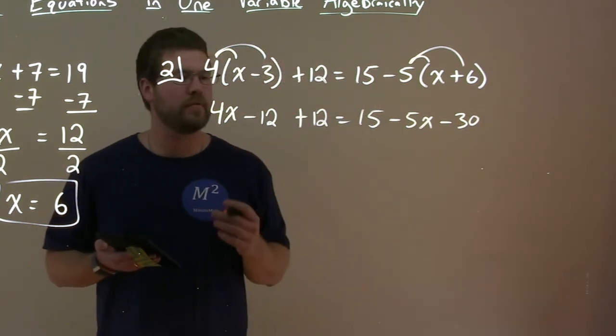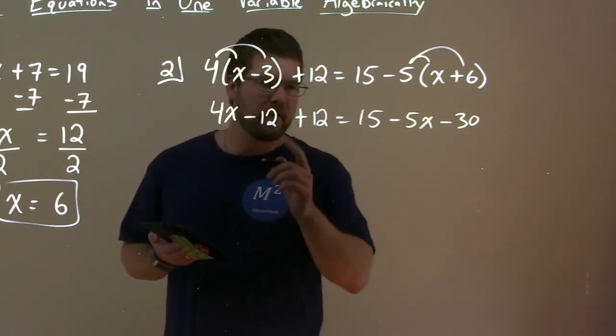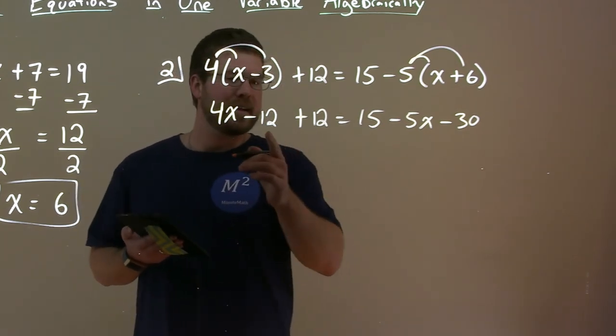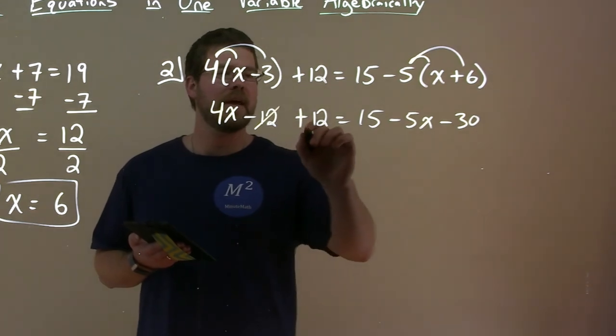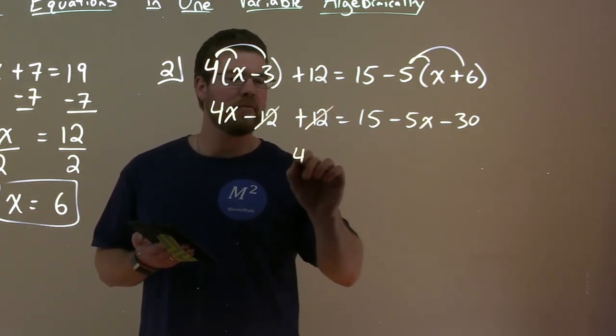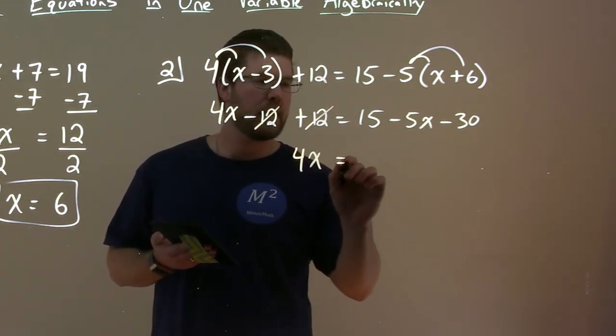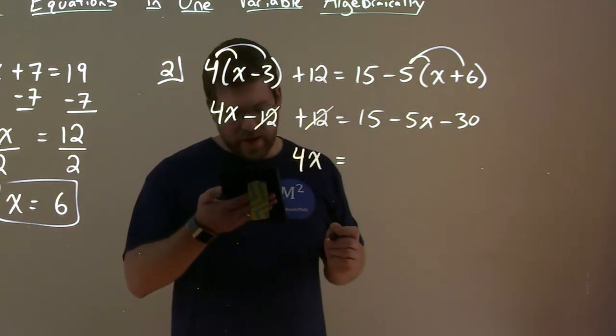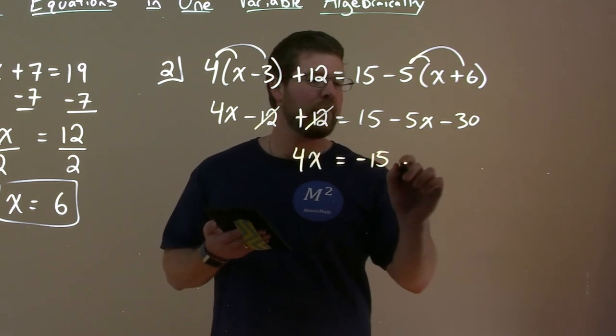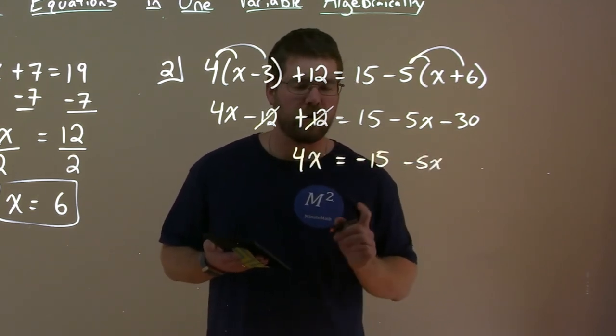So now let's start simplifying what we can. Well, right here on the left-hand side, I can combine my like terms, and I have negative 12 and positive 12. They cancel each other out, and we're left with 4x here. On the right, we have 15 and a minus 30. That gives us a combined minus 15, and then we have minus 5x.